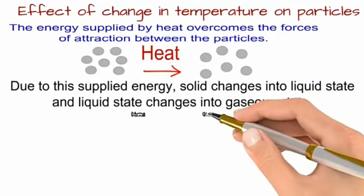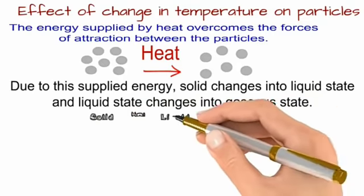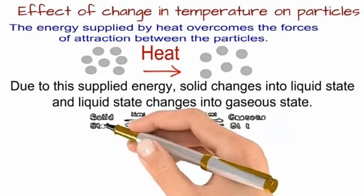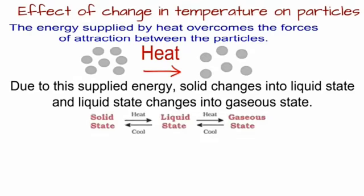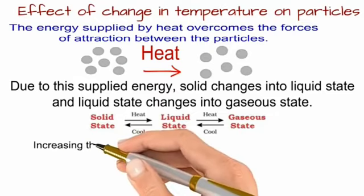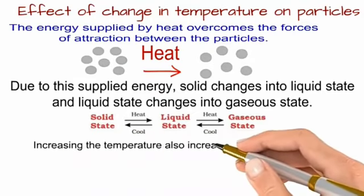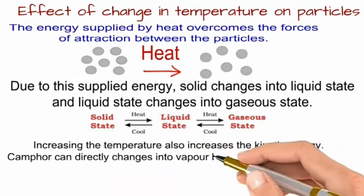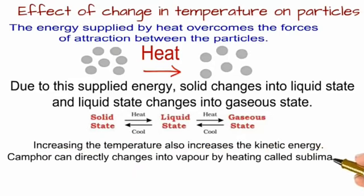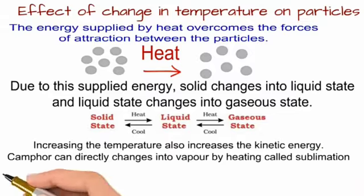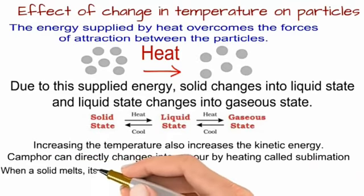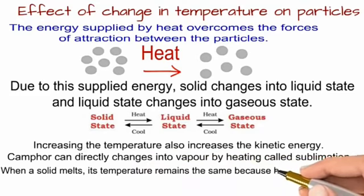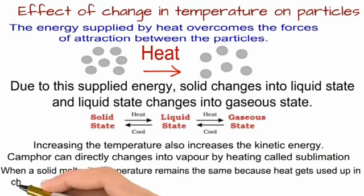Let us look at the interconversion chart. Solid state changes into liquid state on heating and liquid state changes into gaseous state on heating. While gaseous state reverts back into liquid state on cooling and liquid state reverts back into solid state on cooling. Increasing the temperature also increases the kinetic energy. Camphor can directly change into vapor by a process called sublimation.